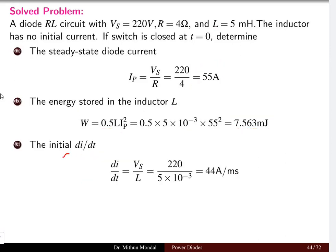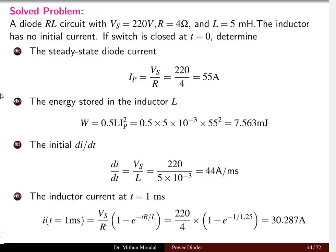When we talk about the initial di by dt which is equal to Vs by L. At time t equal to zero this is Vs by L. Substituting the value of Vs and the inductor value we get 44 amperes per millisecond.